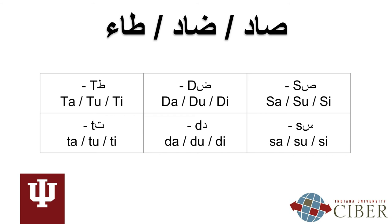Some letters in Arabic are considered to be emphatic, meaning they give surrounding vowel sounds a deeper quality. Three such sounds are S, D, T. These letters will be transliterated with the capital letters S, D, and T. This is in contrast to the non-emphatic letters S, D, T, which will be represented with the lowercase letters S, D, and T. There are three vowel sounds in Arabic — A, U, and E. Listen to the vowel sounds following emphatic and non-emphatic letters.